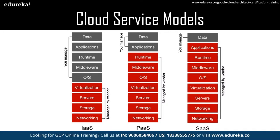Let's try to understand cloud service models. This is one of the key pointers — even for people who know cloud computing, it may be a bit repetitive, but for many attendees new to cloud computing, this is very important. When you talk about cloud computing, these are the pillars or the ways in which different cloud service providers provide services to their users. Let's understand these service models before jumping into GCP. Every cloud service vendor — GCP, Azure, or AWS — has a particular way in which they provide services to users.